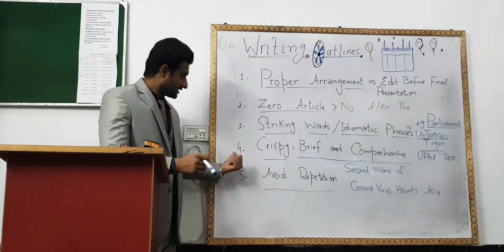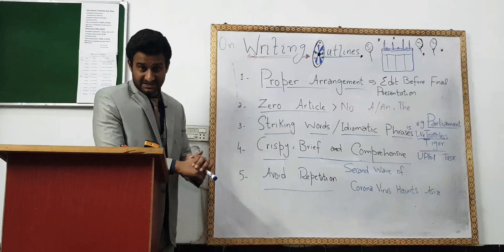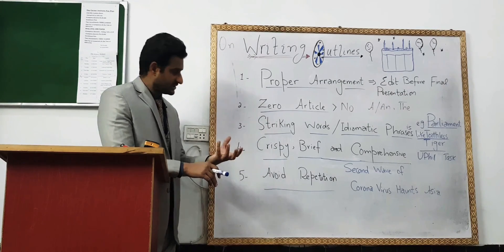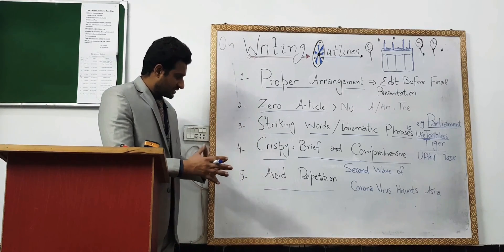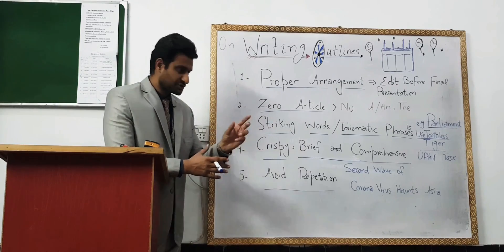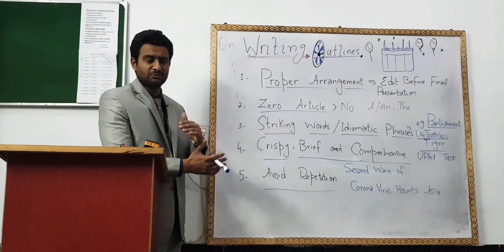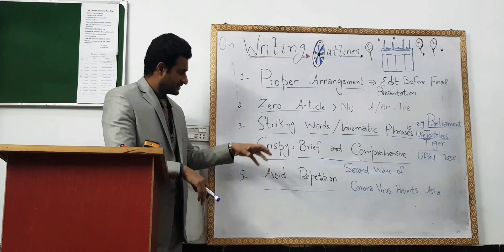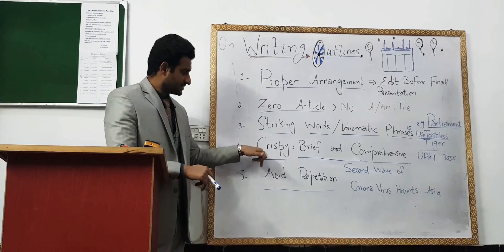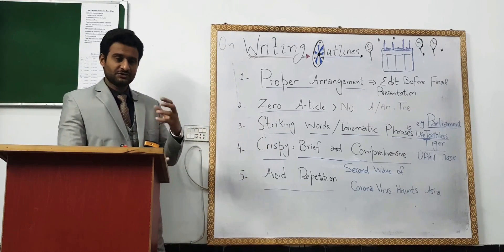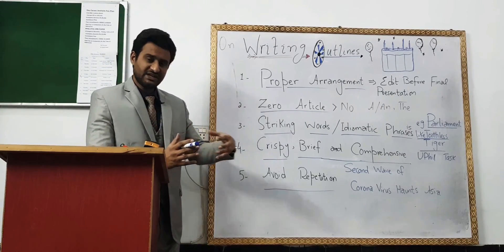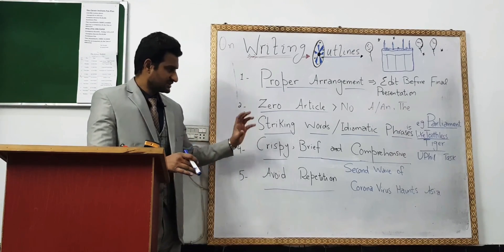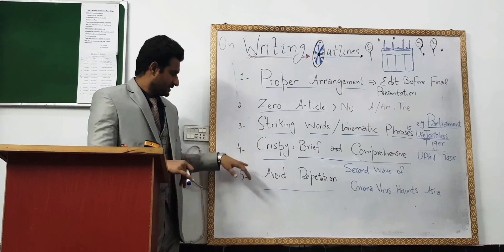If you have three hundred to four hundred striking words, you can easily choose from them and use them to make your outline very interesting. Then number four is it should be crispy, brief, and comprehensive. That's very important. Crispy means it should be interesting, like eating something crispy - it should strike the examiner at first glance. Brief means short words, not long sentences. Comprehensive means you should use such words that convey the overall situation, that overlap or cover the pure topic or paragraph.